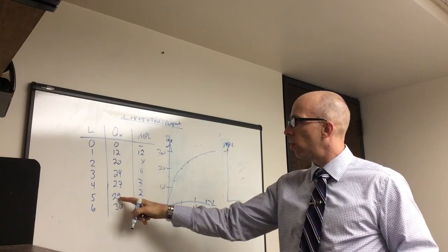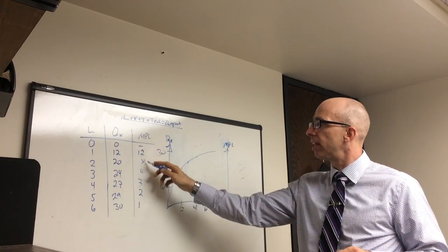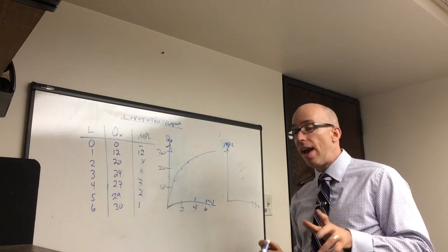Finally, the sixth worker only adds 1. You can see that the marginal productivity of labor, the contribution of each worker, is falling the more workers you add.